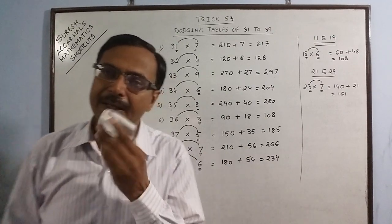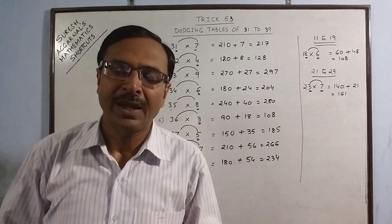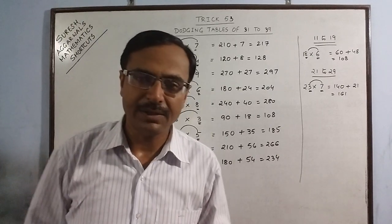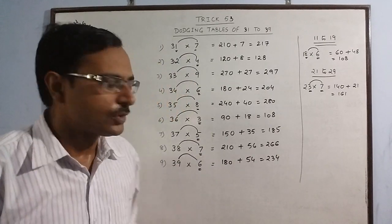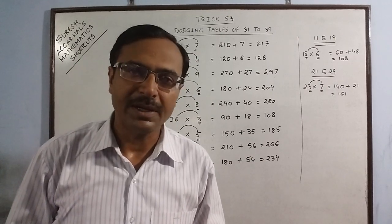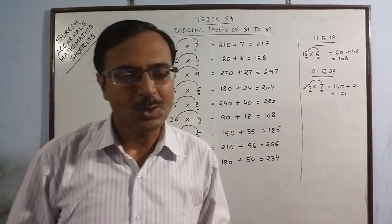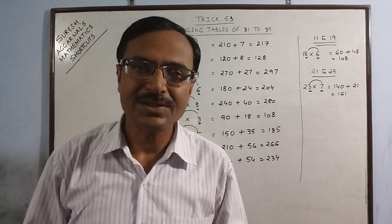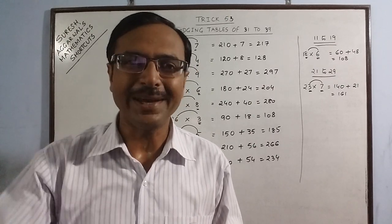This method has to be told to children right from the basic age of 8 years, 9 years, so they can write all dodging tables and whenever they confront these calculations in higher mathematics, they can do it with ease. Keep learning, keep sharing, subscribe the channel, and recommend it to your friends if you like it.